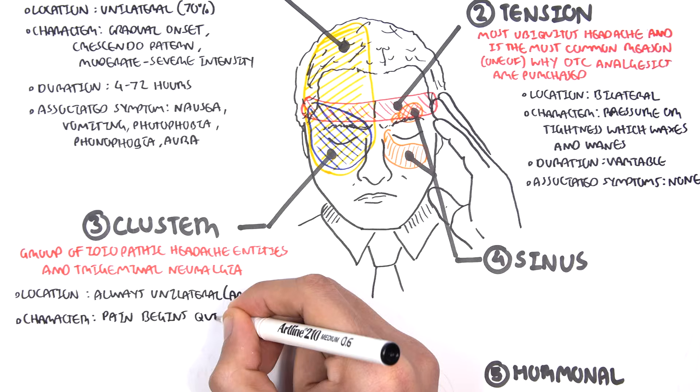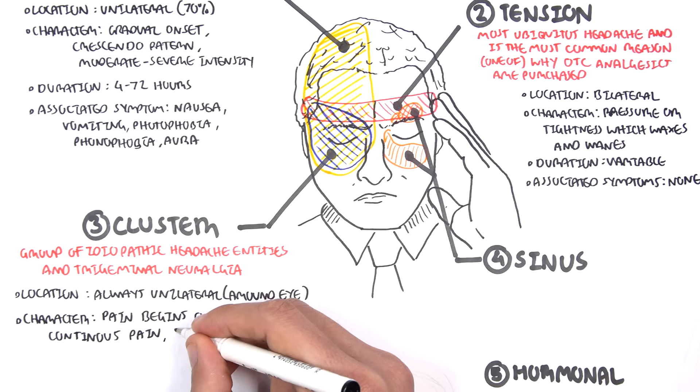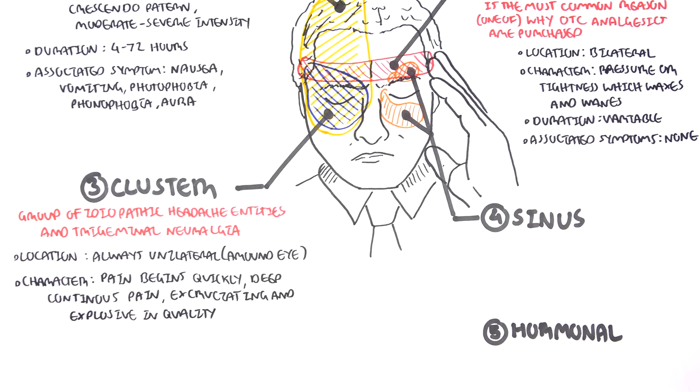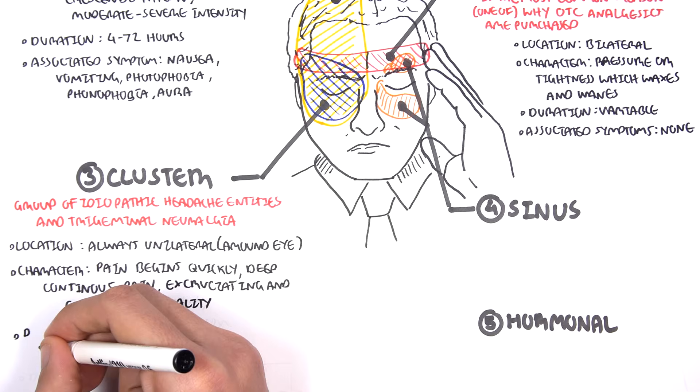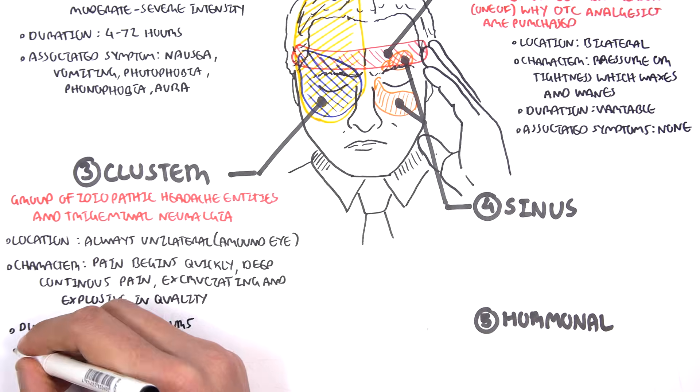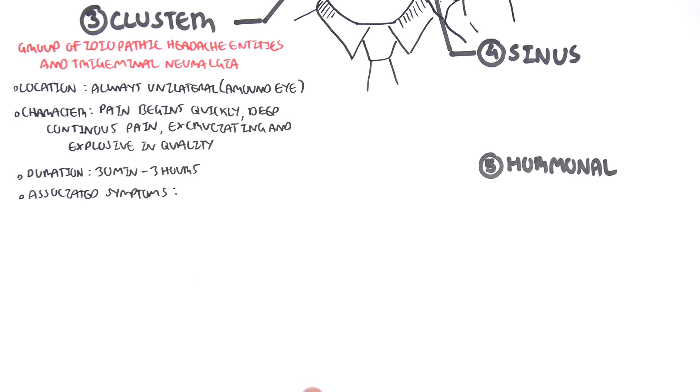The characteristic of a cluster headache: the pain begins quickly, it's deep, continuous pain, excruciating and explosive in quality. The duration is pretty quick in respect to the other headaches we talked about, 2 to 3 hours. The associated symptoms are essentially the symptoms of the trigeminal nerve problem as well as some other nerve problems.